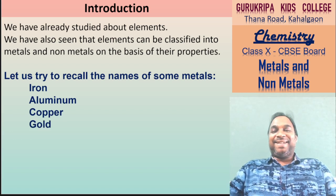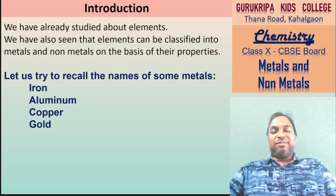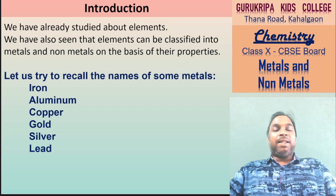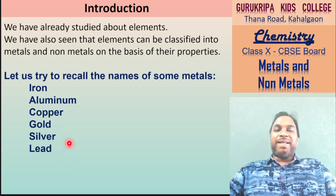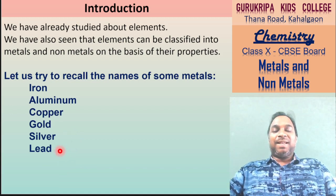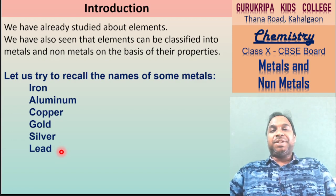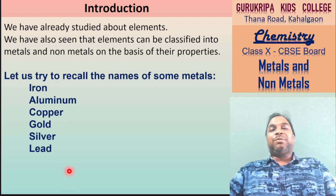Gold तो सबसे common metal है ही. और कौन सा metal common है? Silver. Gold और silver दोनों हम लोग को लगते हैं ornaments में, jewelry में. इसके बाद Lead है - एक metal जो battery में use होता है. जो inverter में बड़ी rechargeable battery होती है, या automobiles में car, bike, truck में जो battery लगती है, उसमें lead होता है.